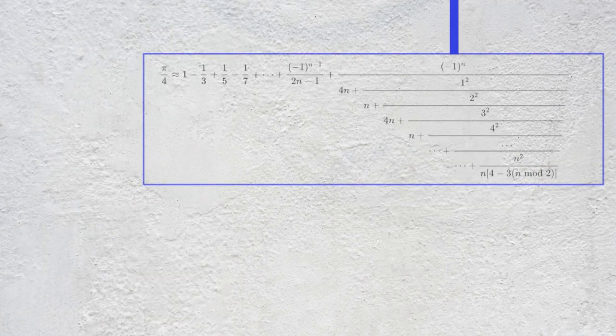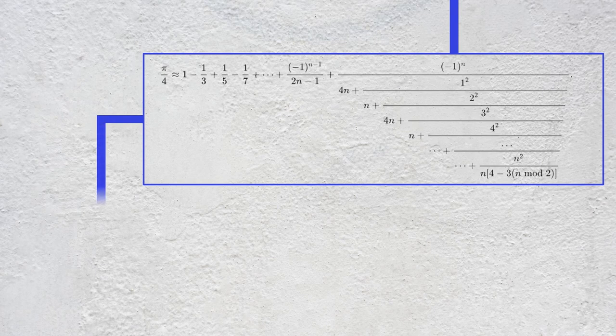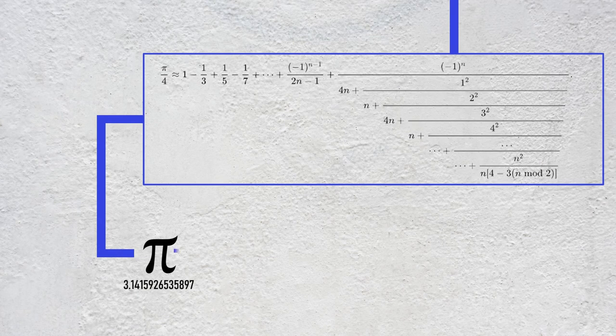Madhava also discovered application of his infinite series by expanding them. One of them was his formula for pi through which he obtained the value of pi up to 13 decimal places.